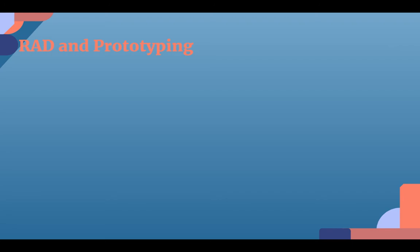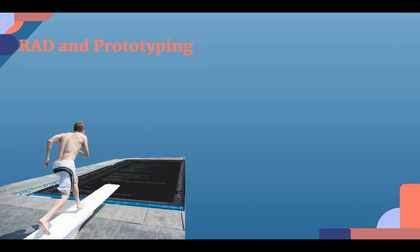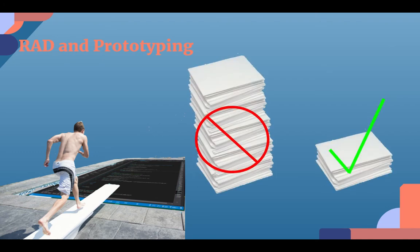Rapid application development, or RAD, is a process where software is developed quickly by skipping most of the usual stages of planning. A basic design is quickly laid out, which is then followed by jumping straight into the programming. This method of development is more effective for smaller projects and is definitely more commonly used in end user development.